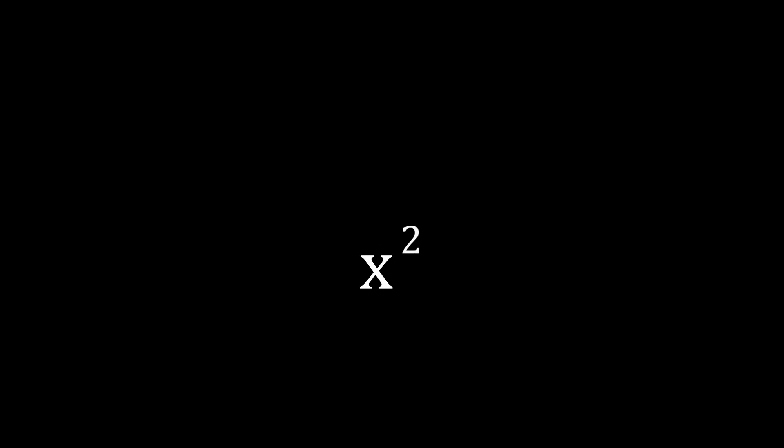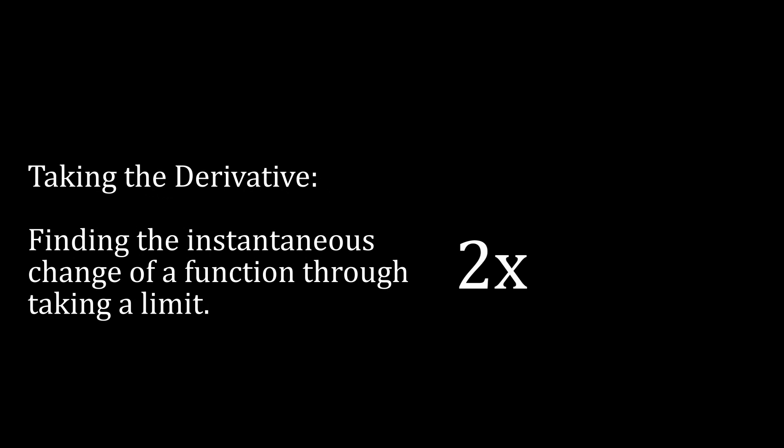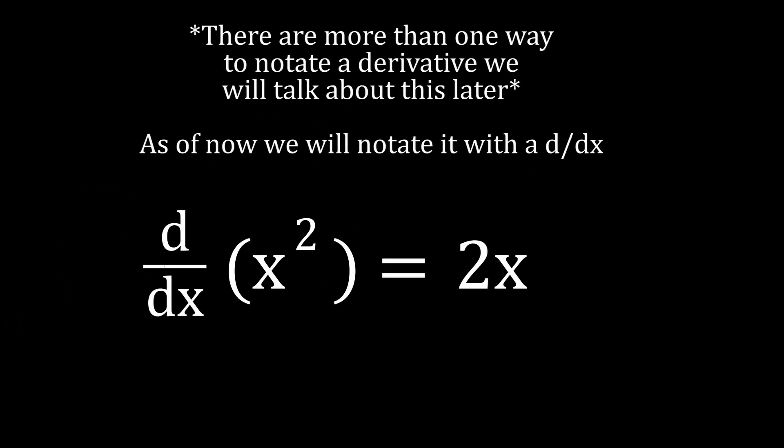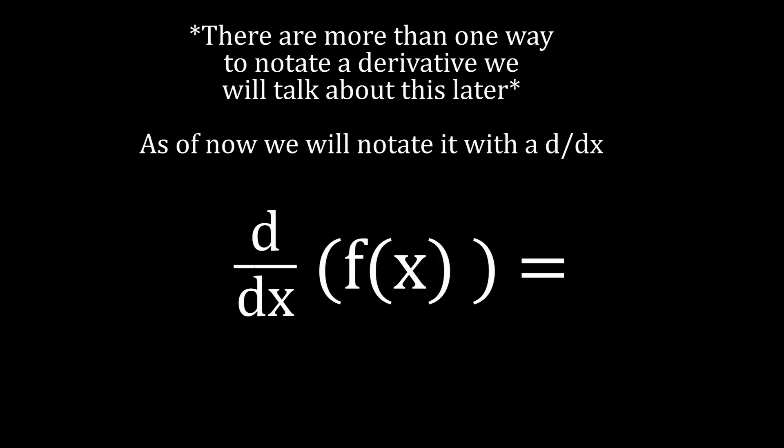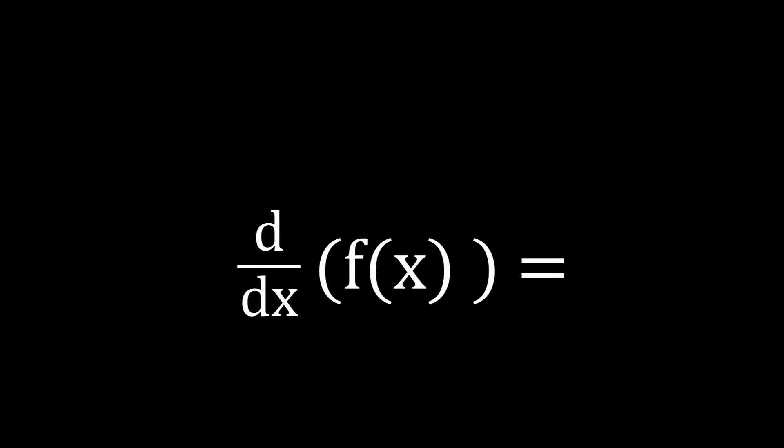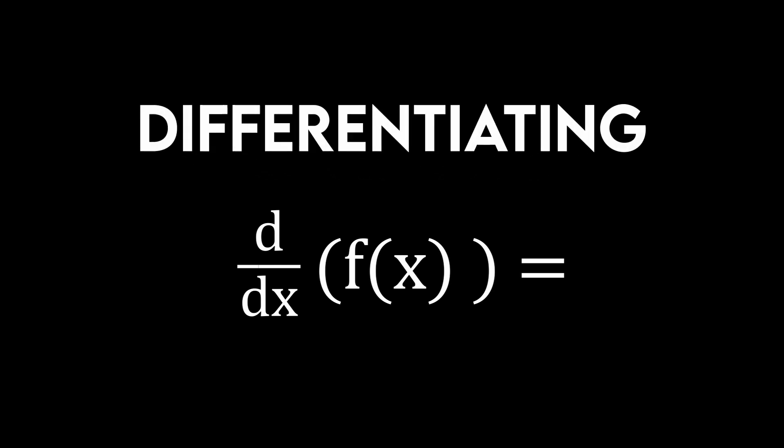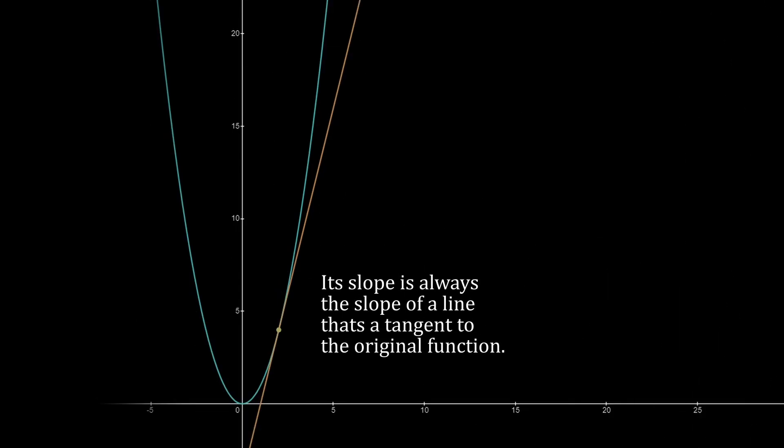The previous example of finding the gradient of the curve is what we call taking the derivative of a function. So, 2x is the derivative of x squared. Though a process used for finding the derivative is called differentiation. So, when we apply this formula, we are differentiating the function. If you pay closer attention, we can also see that the derivative is always tangential to the original curve.